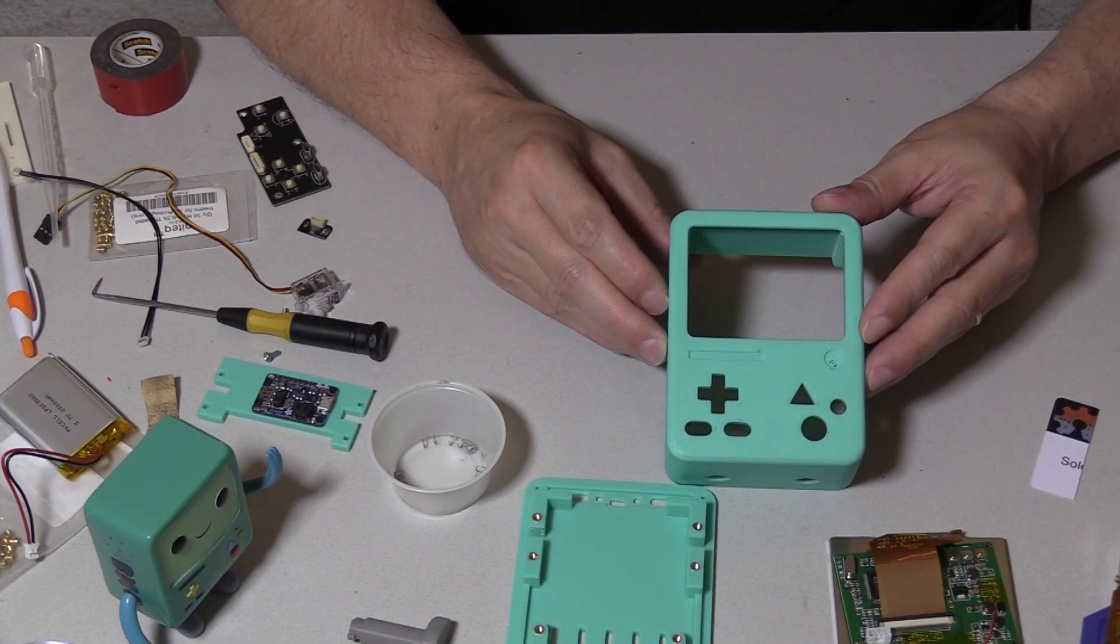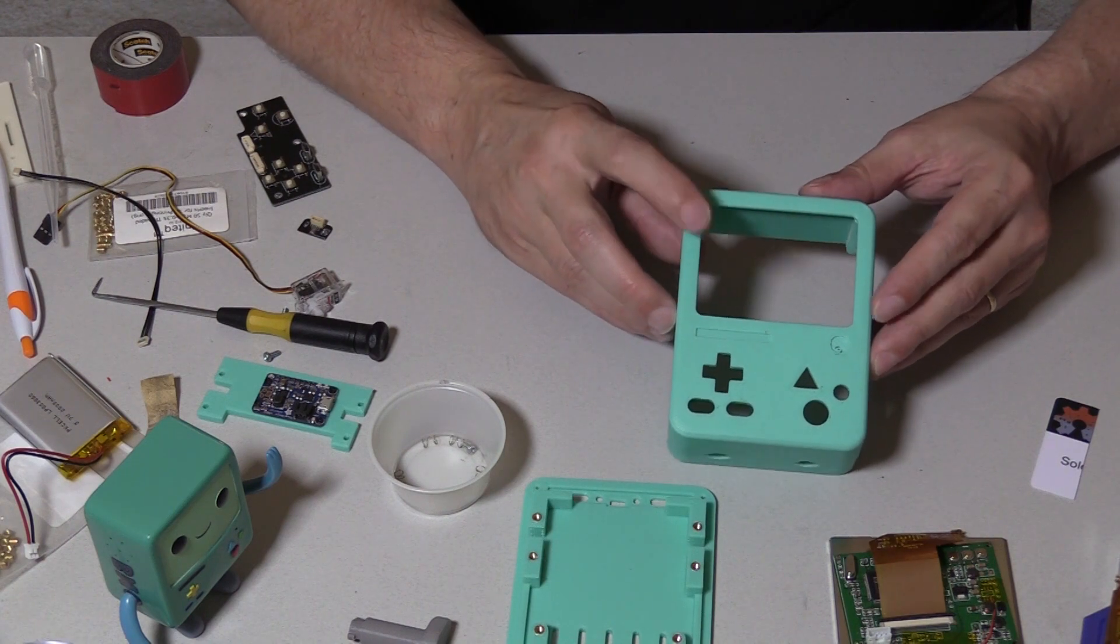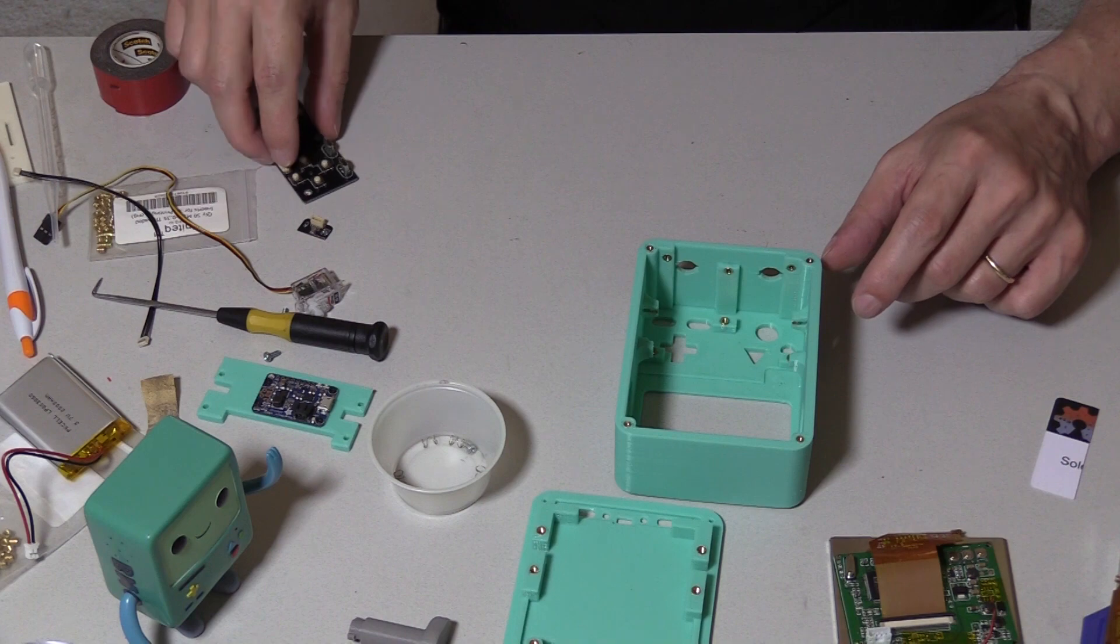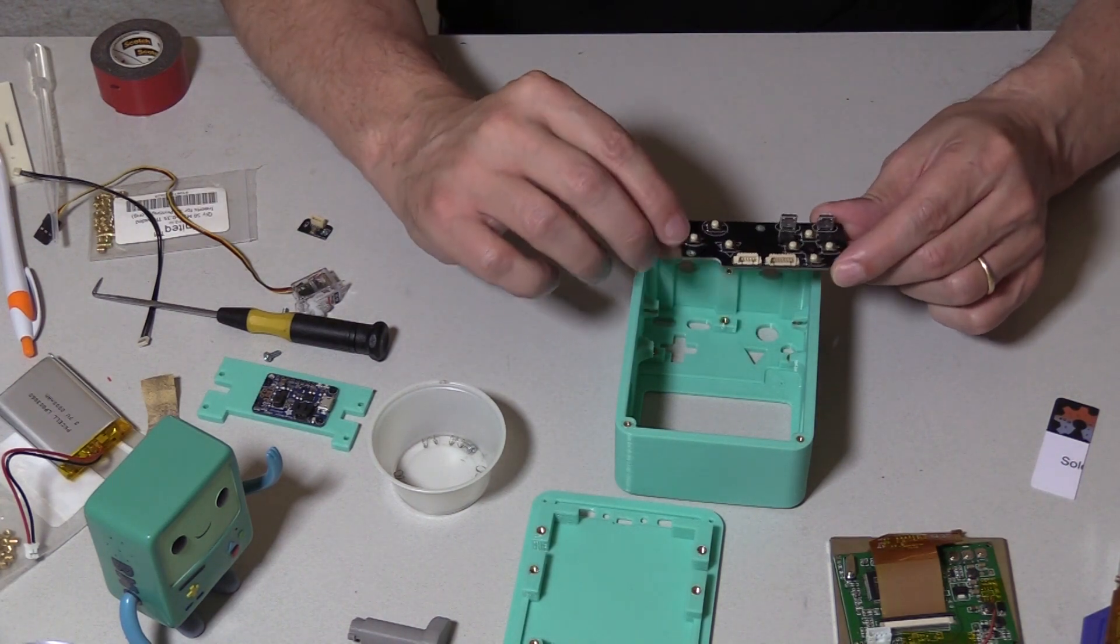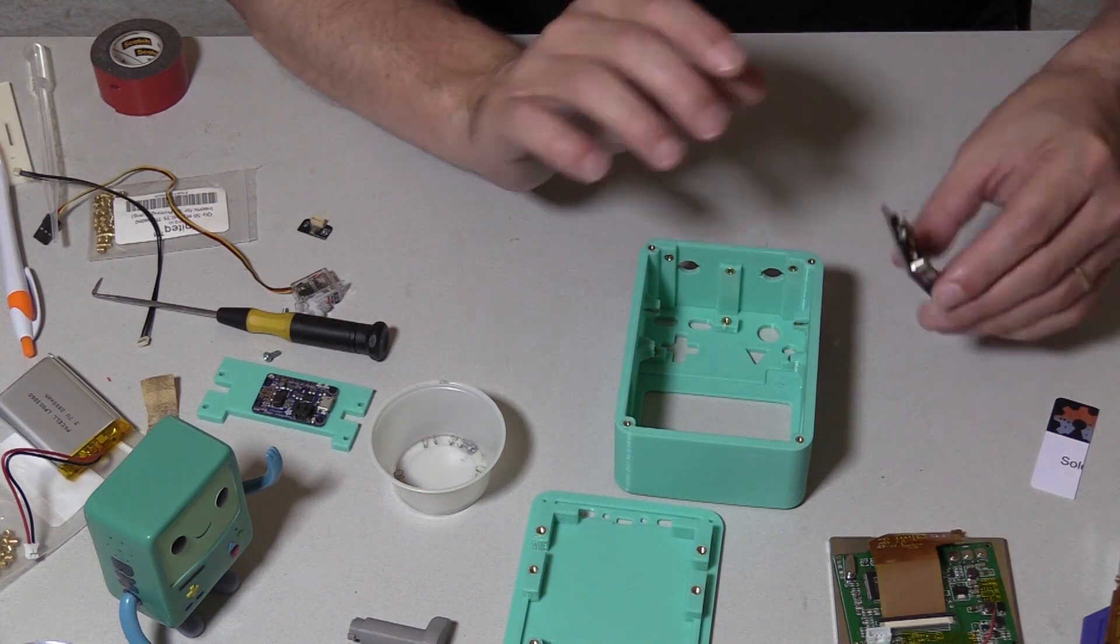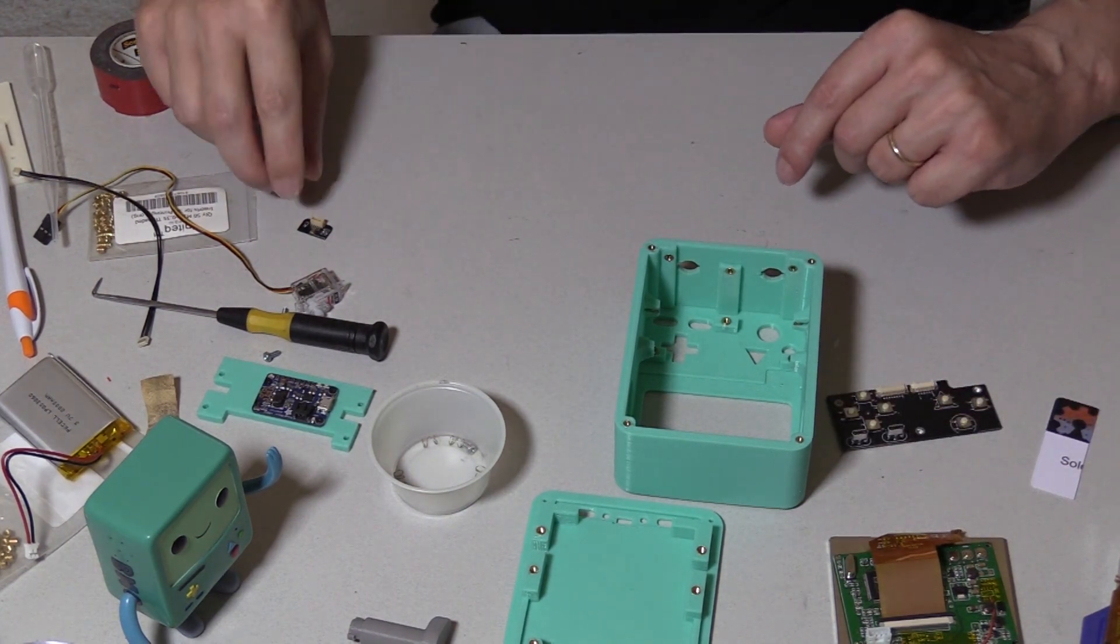Okay, let's start the assembly process. I'm going to start by putting the screen in. There's a couple of ways to do it. You can put in the button board first and then the screen. They kind of get in the way of each other, but I'm going to go with the screen.